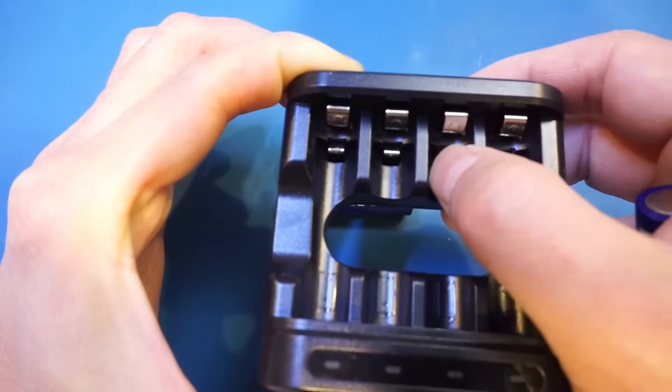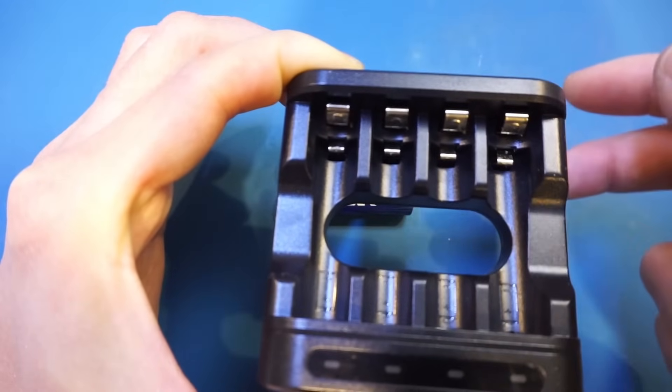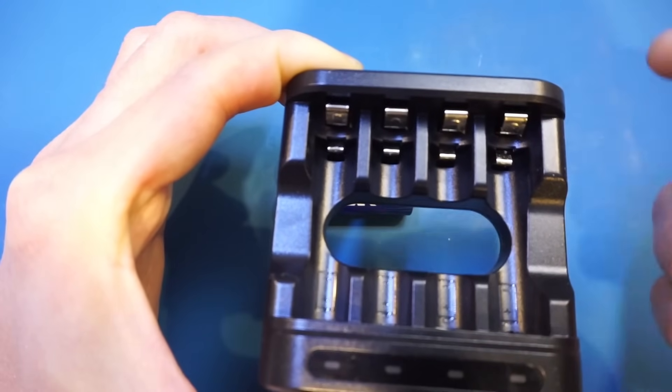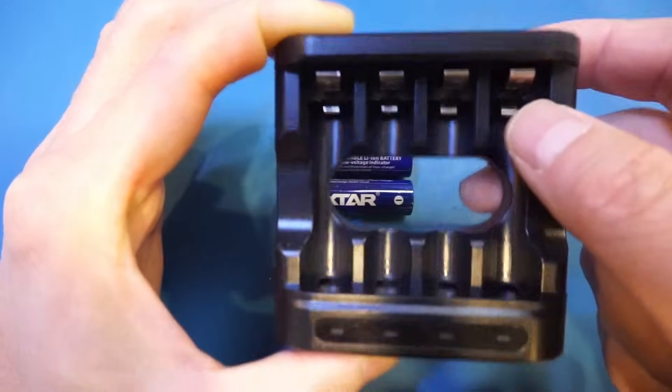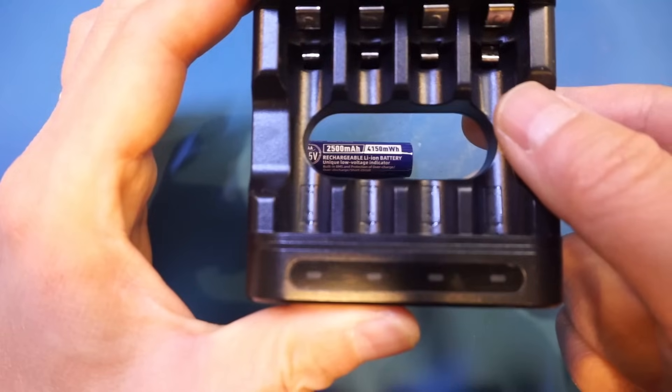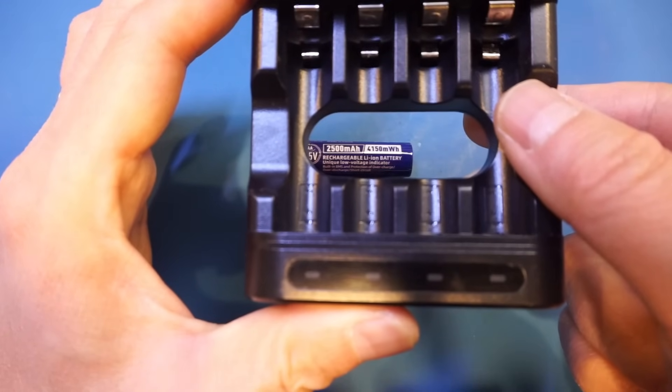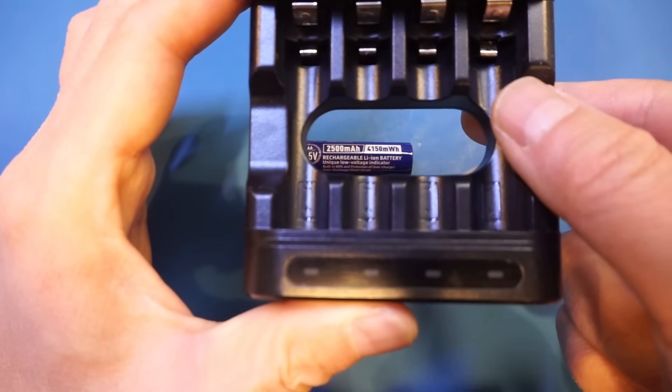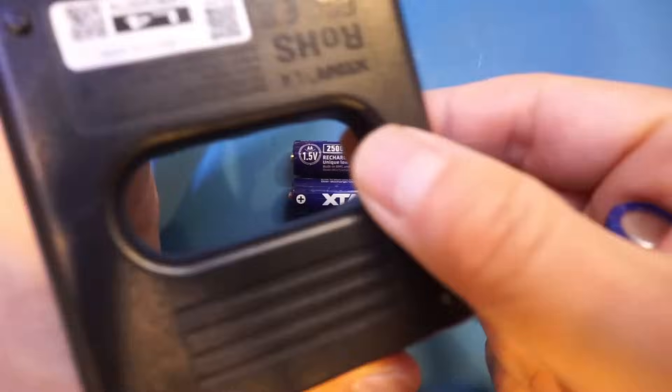The negative terminals have two contacts. That's because this charger supports both AA and AAA charging. And you can see there is nothing special about the positive terminal. There is just one contact here. In fact, this charger is compatible with nickel metal hydride rechargeable batteries as well, according to what is printed on the charger.